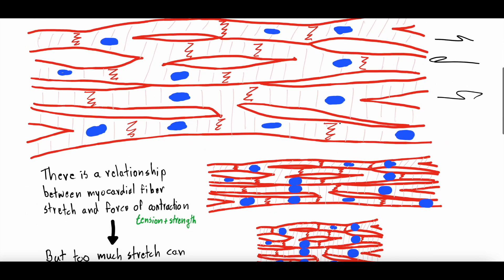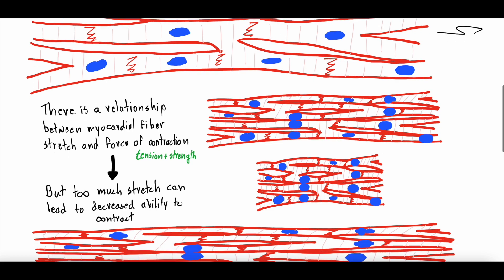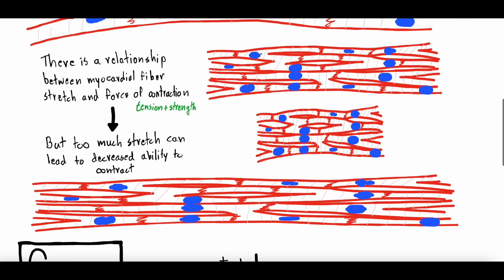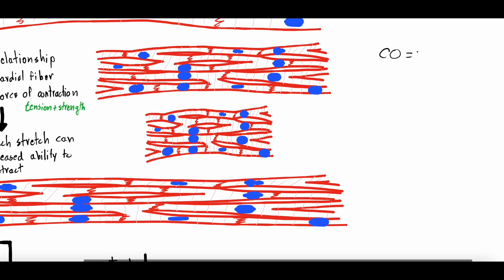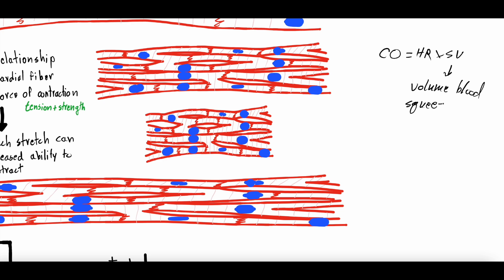The robustness of that myocardial muscle fiber contraction — how much it contracts and squeezes down — is going to determine how much blood is pumped out of that ventricle. Cardiac output (CO) equals heart rate times stroke volume. Heart rate is how many times the heart is squeezing per minute, and stroke volume is the volume of blood squeezed out of the ventricle with each heartbeat.